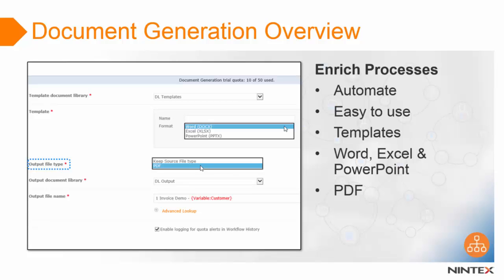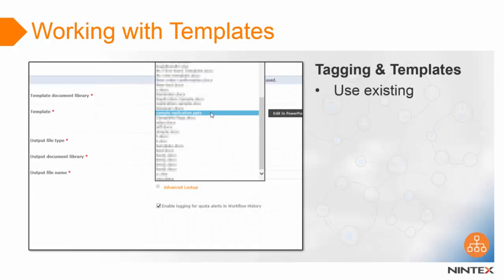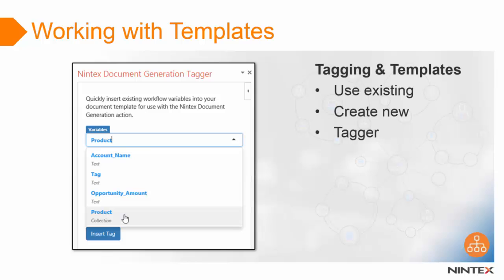Now let's talk a little bit more about templates. When configuring the document generation action you'll need to select a template to generate the document. You can use an existing template from any list or library on your site and select to edit it from within the action interface. Or if you'd like to create a new template you can easily do this directly from the interface by selecting the Create Template link.